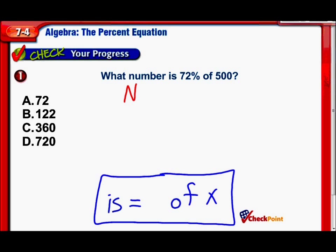So what number, that's our variable. Now we have the word is. Is is our equal sign. 72%, so we just write our 72%. Of, as we said earlier, of means to multiply. And then I just bring down my 500. Did you see that? Each part of the sentence actually turns into one part of the equation.